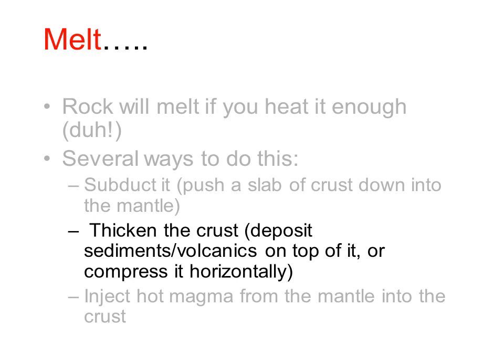However, in addition to subduction, there are other ways of inducing melting, such as thickening of the crust to increase the pressure and force the lower parts of the crust deeper into the hot mantle. There are two main ways to thicken the crust: you can pile new rocks on the surface, or you can compress it horizontally to form folds and thrust folds.